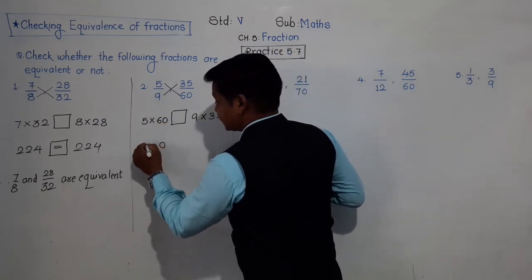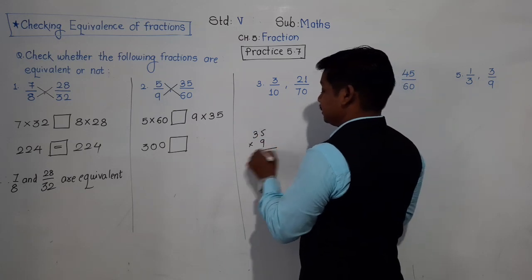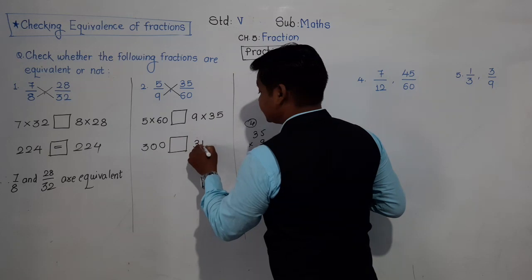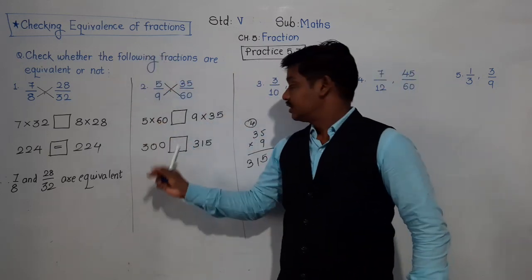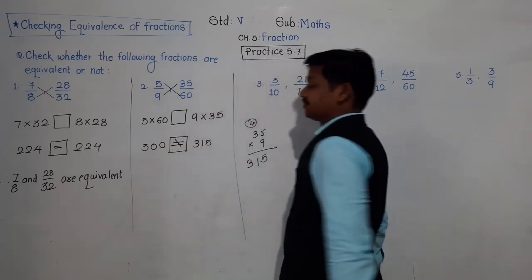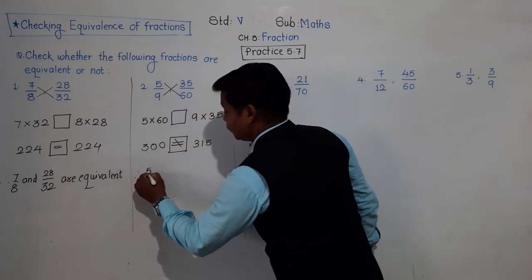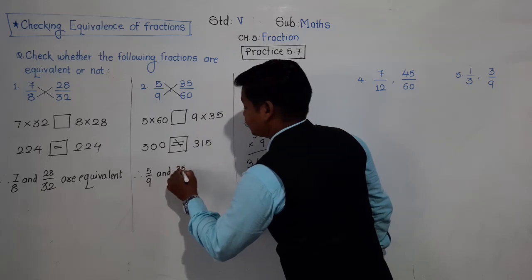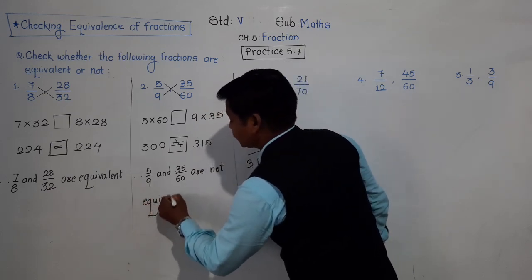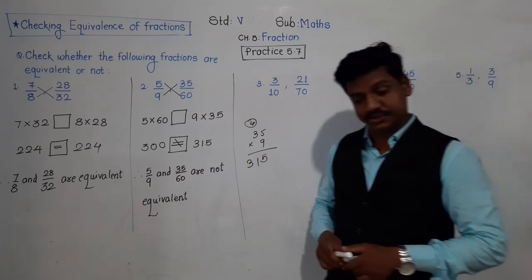5 into 60: 5 zeros are 0, 5 sixes are 30 — so 300. For 9 into 35: 9 fives are 45, 4 carry; 9 threes are 27 plus 4 is 31 — so 315. When we do the cross product, one side is 300 and the other is 315. They are not equal. So 5 upon 9 and 35 upon 60 are not equivalent, because their cross products are not the same.